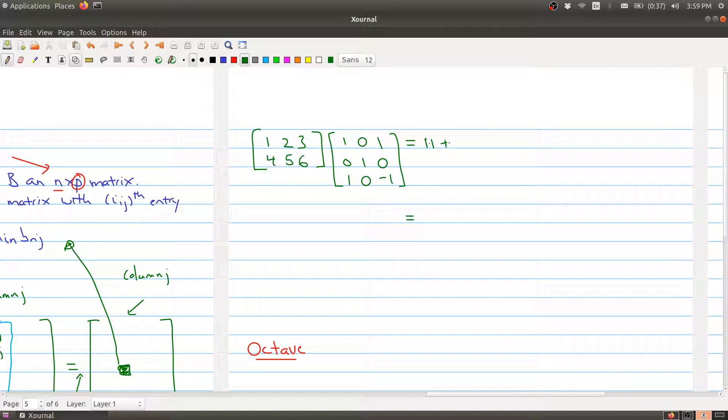I have 1 times 1 plus 2 times 0 plus 3 times 1. Then I pair the first row with the second column. So I have 1 times 0 plus 2 times 1 plus 3 times 0. Then I pair the first row with the last column. So 1 times 1 plus 2 times 0 plus 3 times minus 1. So that gives me the first row of my matrix.